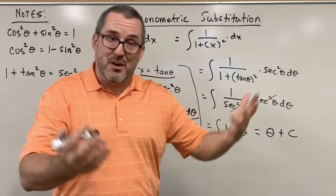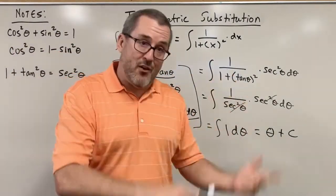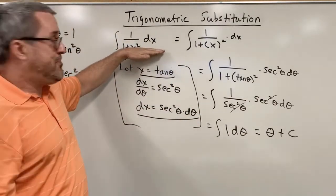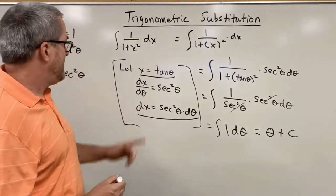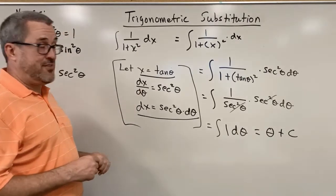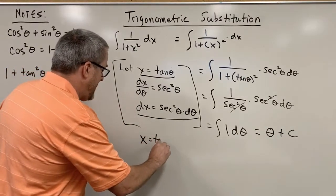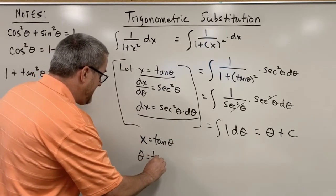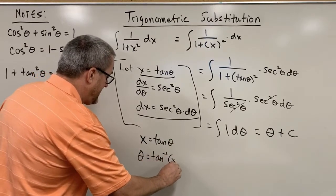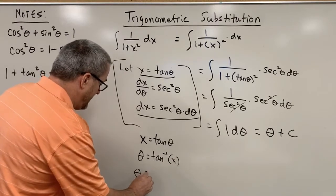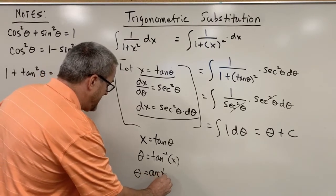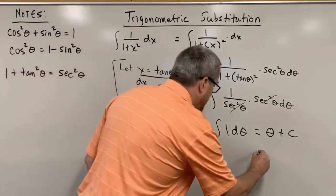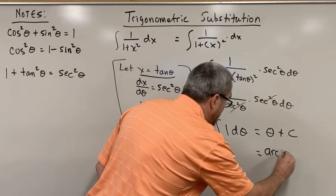Now this is great, but we like to express our final answer in the same variable we started with. So let's transform this back to be in terms of x. Remember, we let x equal tangent of theta. So if x is equal to the tangent of theta, then we know that theta is the inverse tangent of x, or alternatively, the arc tangent of x. So our final result is, I'm going to use the arc tangent notation.